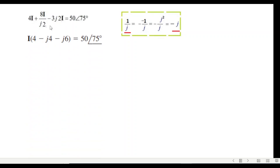So I'm taking the common now—I'm sorry, i is in every one. So we'll take i common. Remaining here is 4. 8 divided by 2 is 4, and 1 over j will be minus j from this. And then this is minus 6j equals 50∠75°.